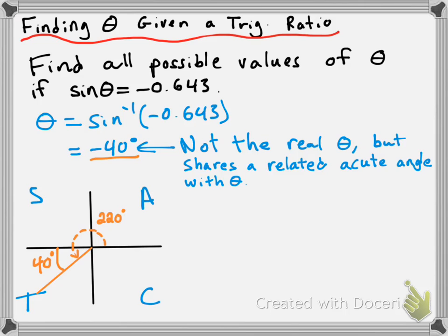We know we're going to have a second one, though, in quadrant 4. So let's draw out another Cartesian plane. We have an angle in quadrant 4. It has to have a related acute angle of 40 degrees. And so what would that angle be? Well, it's 40 degrees less than a full 360-degree turn. So that is a 320-degree angle.